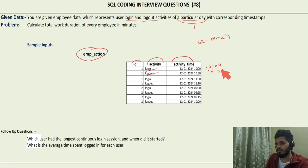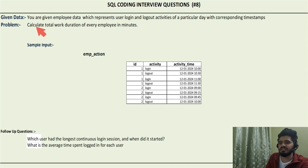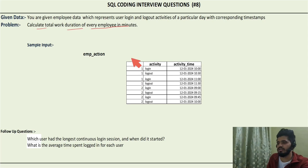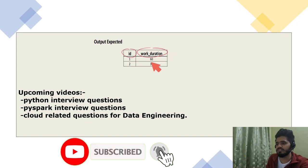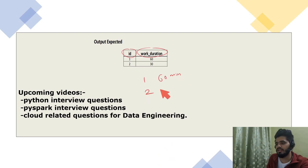Our problem statement says: calculate the total work duration of every employee in minutes. We have to calculate work duration for every employee — here we are given two employees, ID one and ID two — and report their work duration in minutes. The expected sample output shows ID one working for 60 minutes and ID two working for 30 minutes on that particular day.